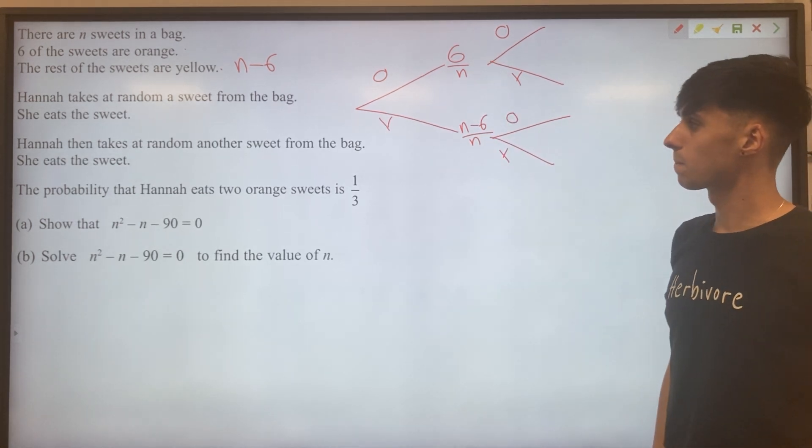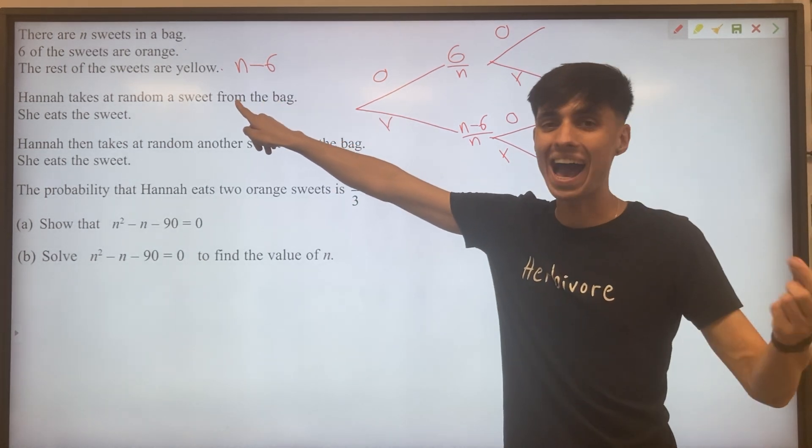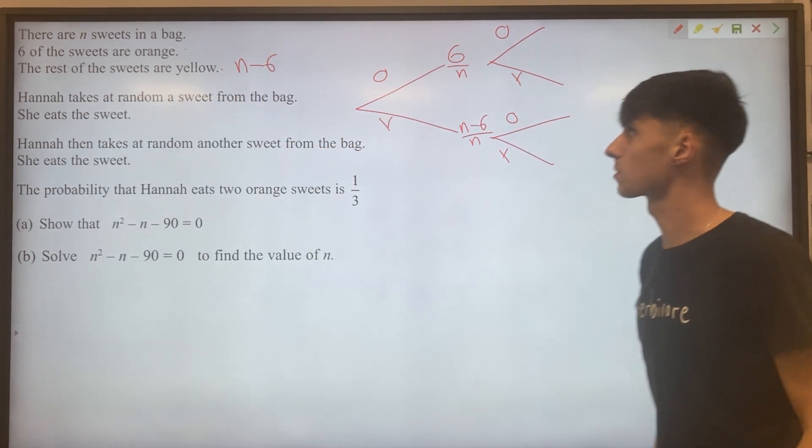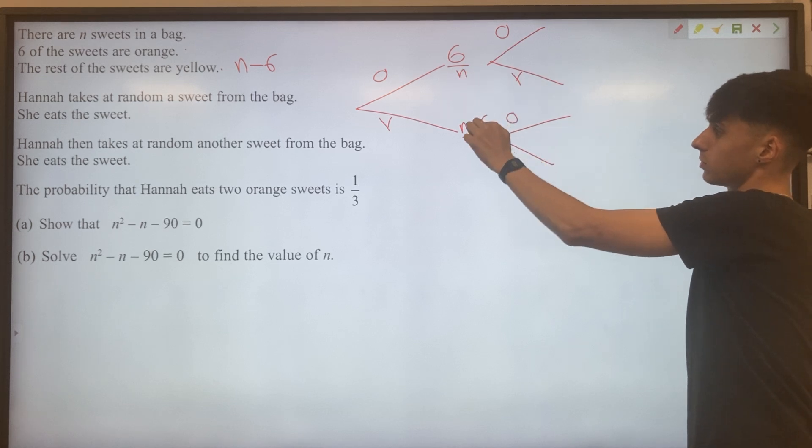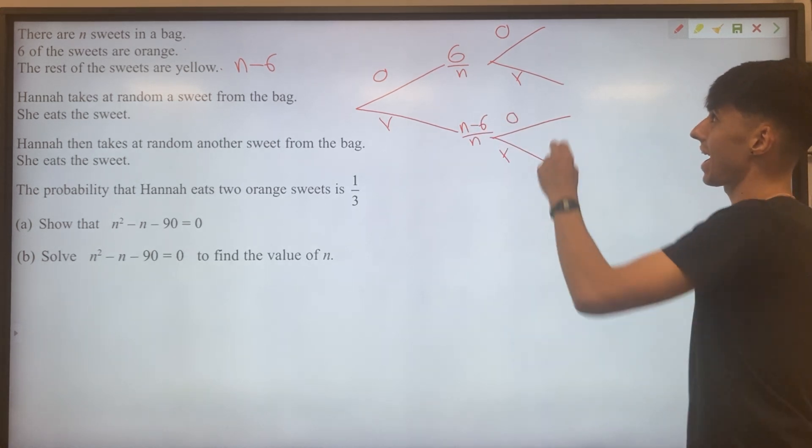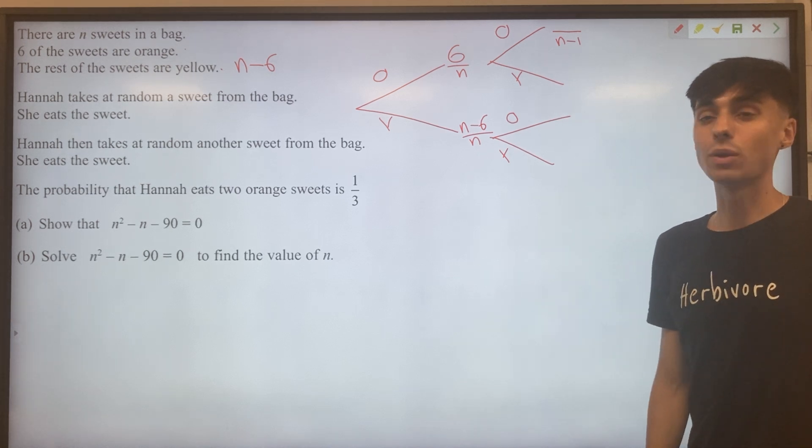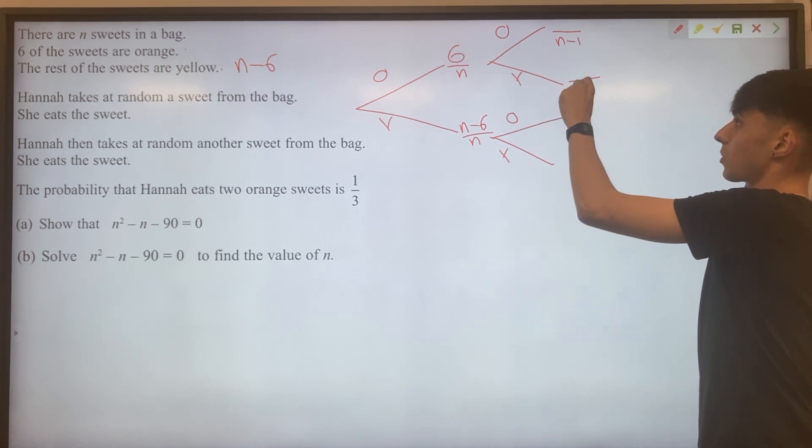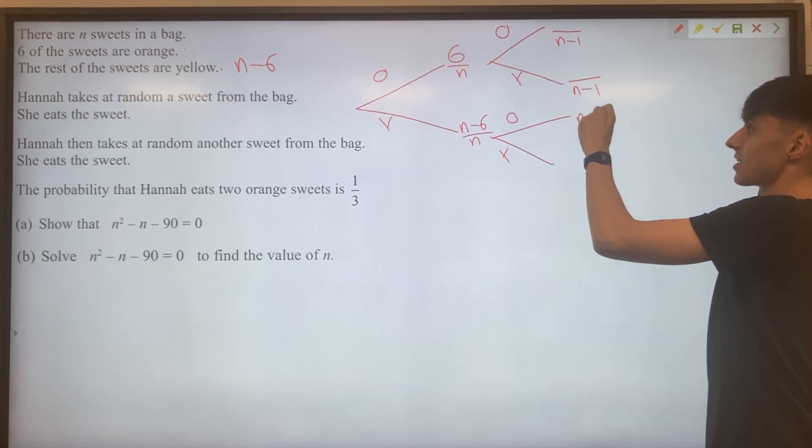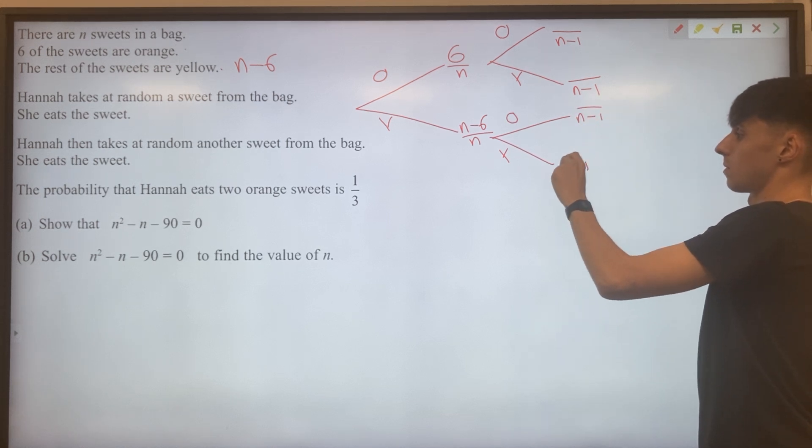Second pick though, you have to remember that Hannah has eaten the first sweet. So our total number of sweets is no longer N. It's now out of N minus one. And we can put that for every possible outcome here. Because in any case, Hannah is eating the first sweet.